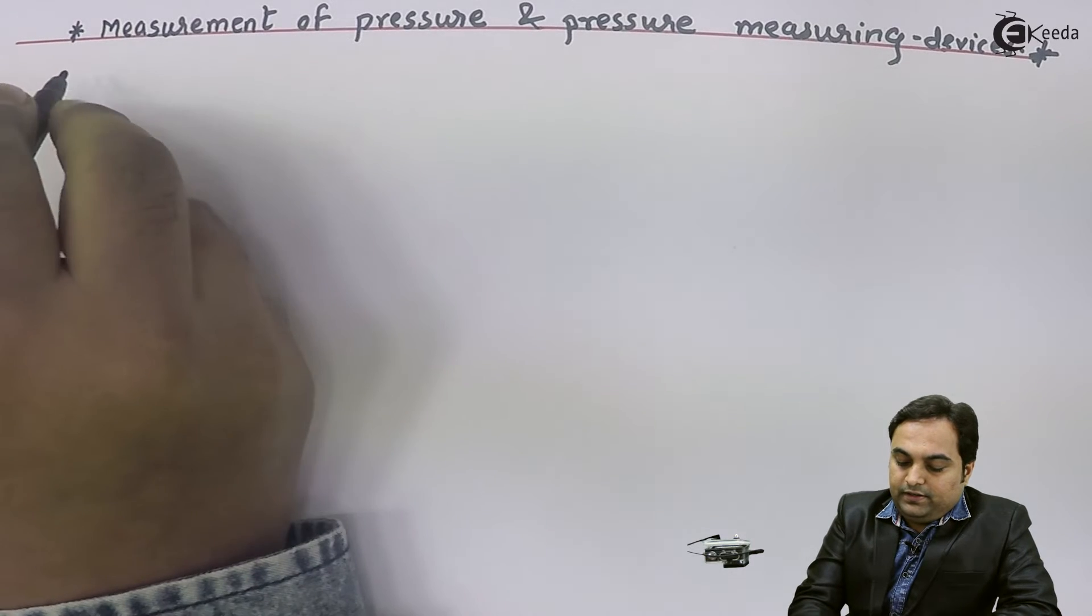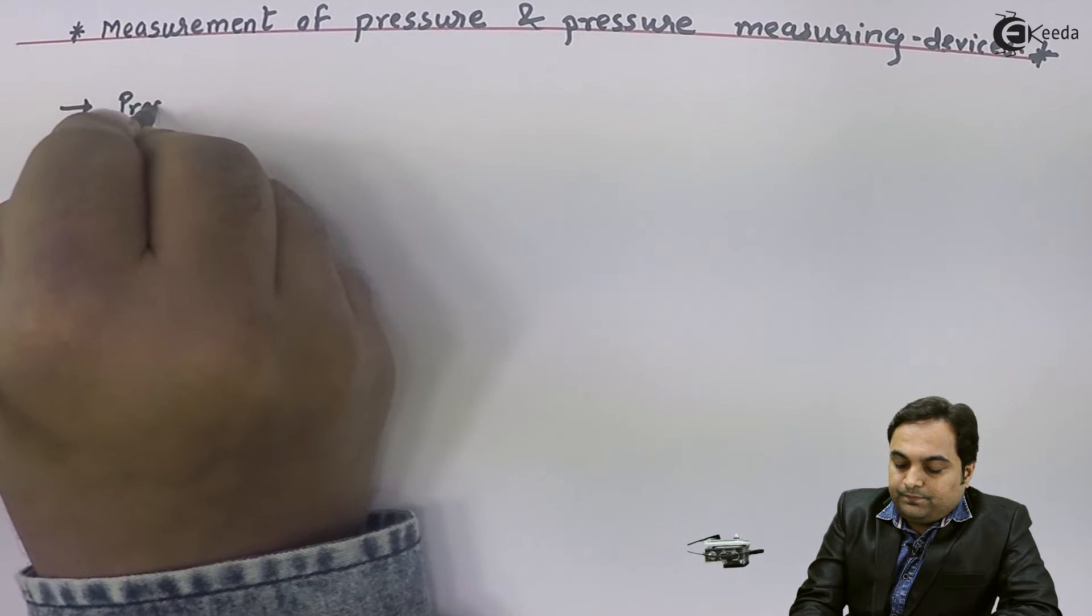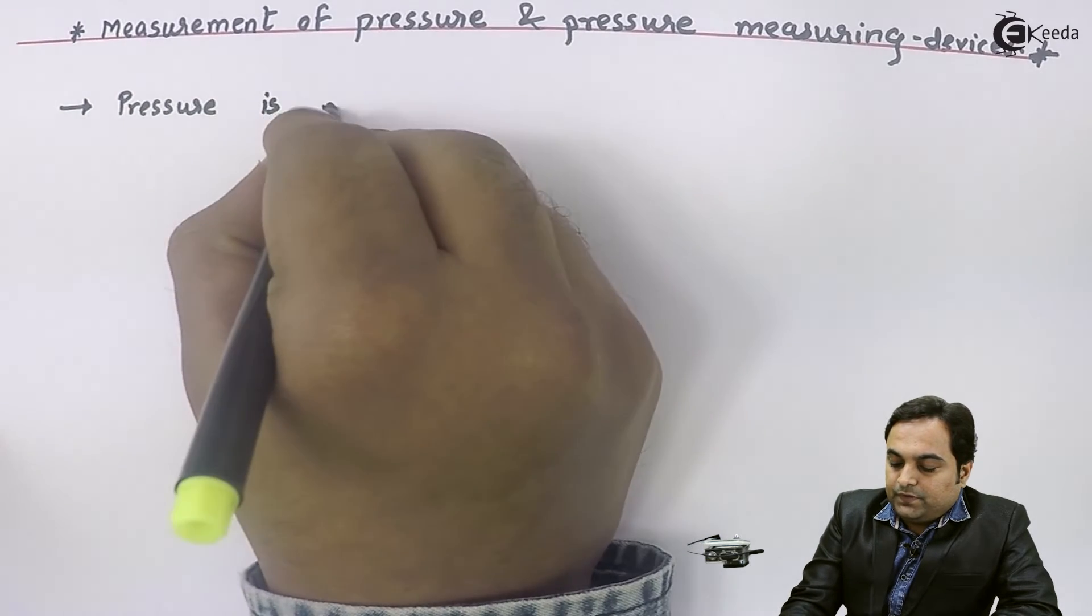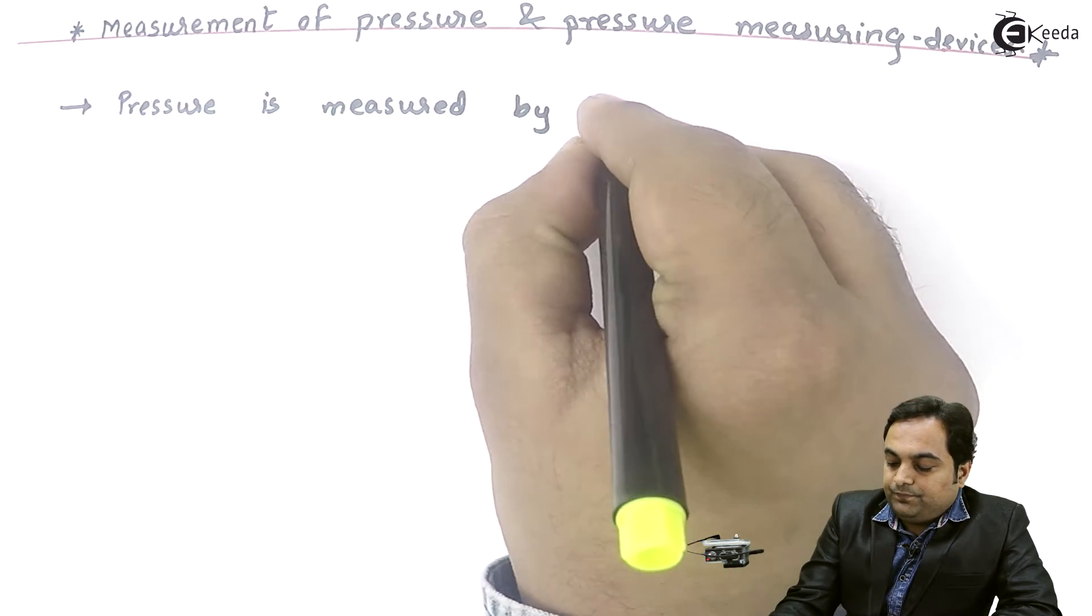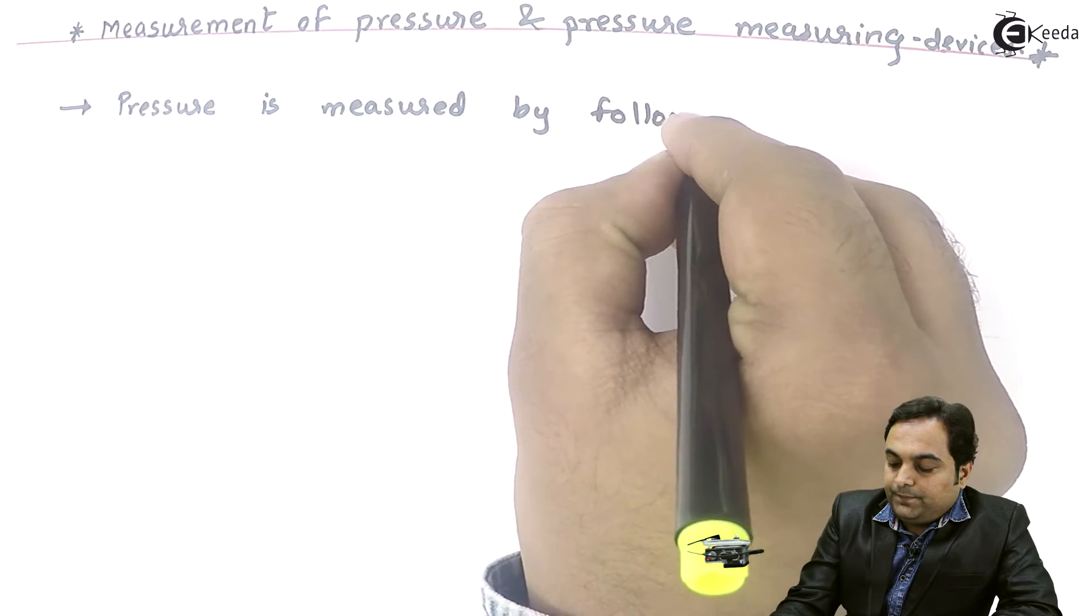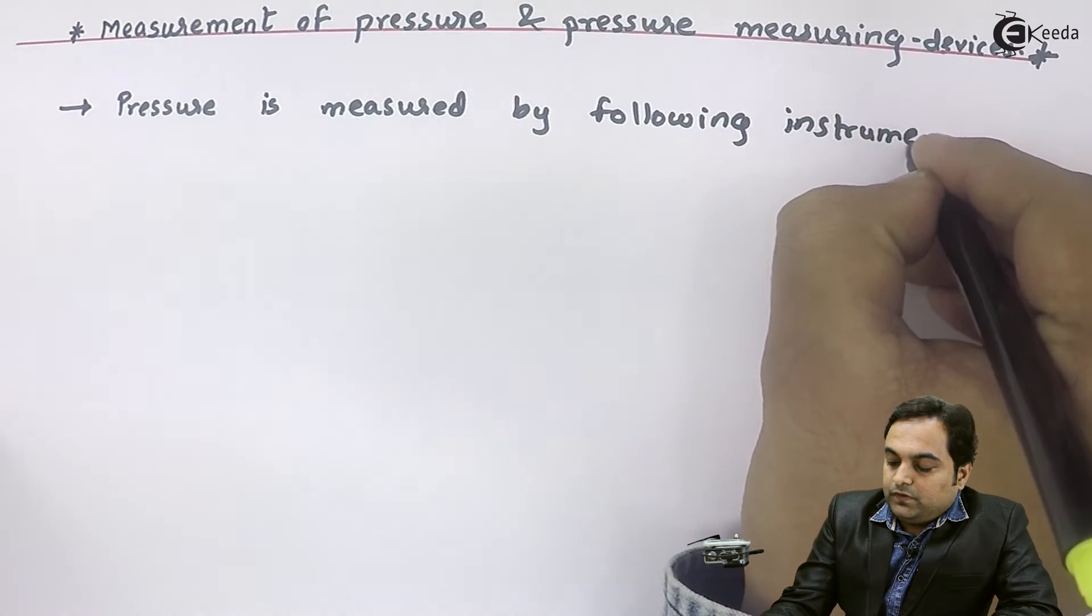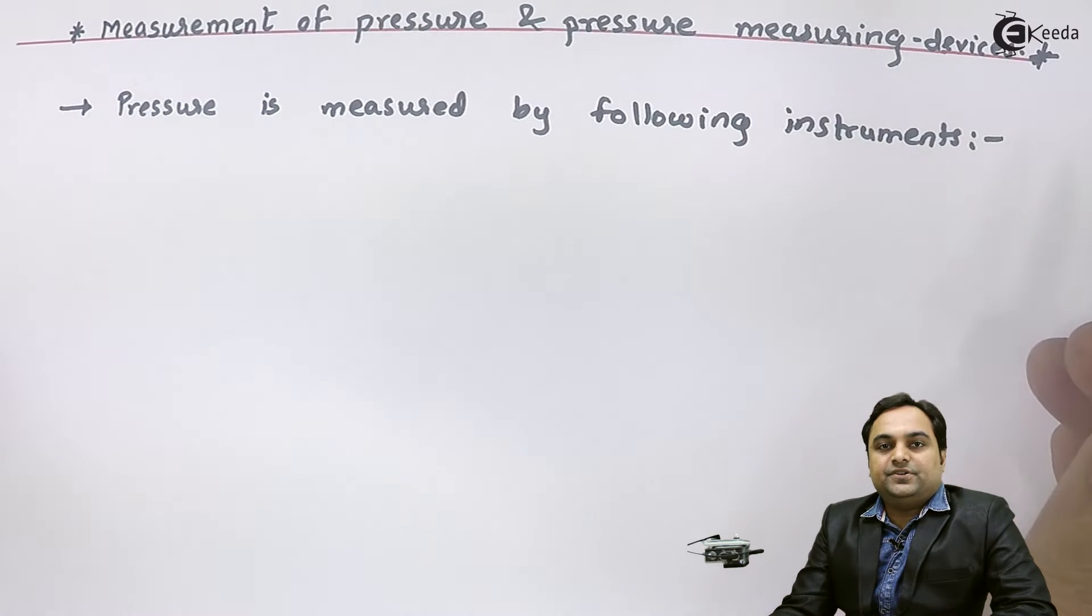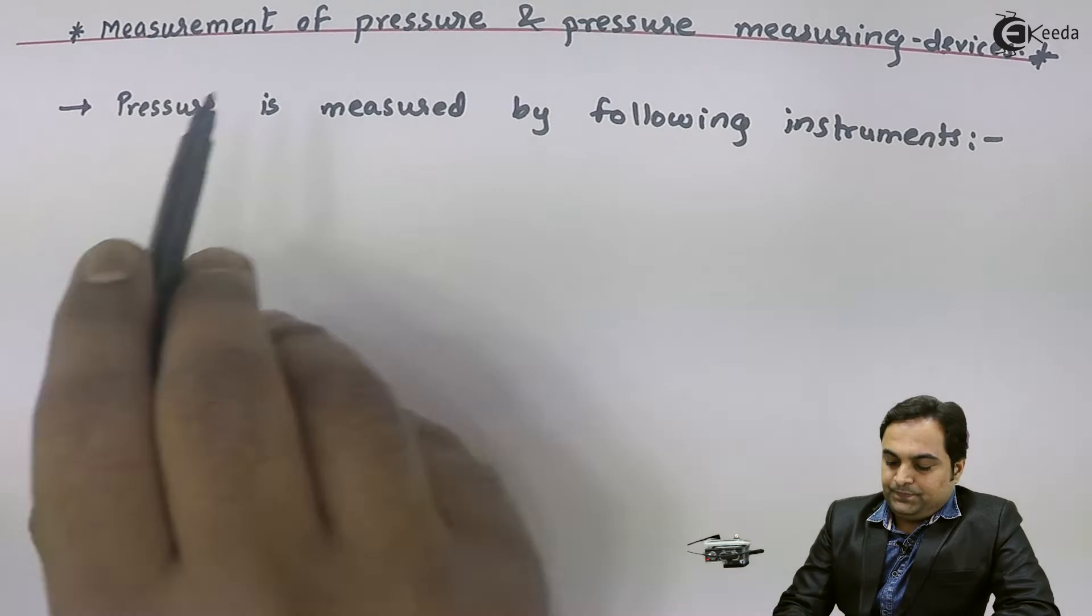Let us start with that. See, the measurement of pressure - I'll write down: pressure is measured by following instruments. Since in this video we are seeing the pressure measuring devices, I will mention the names of all the devices which we are using for measuring pressure.